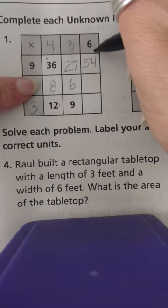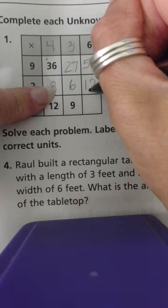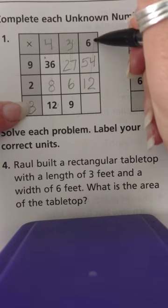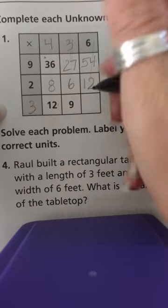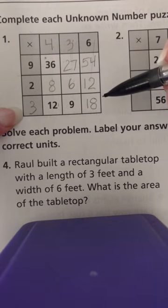Two times six is equal to twelve. Three times six is equal to eighteen. And we've completed the unknown number puzzle.